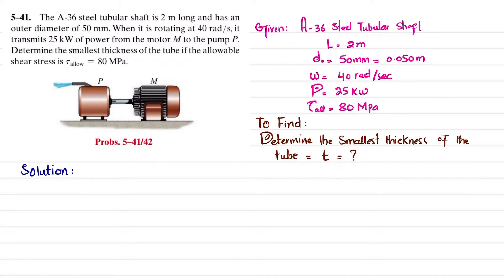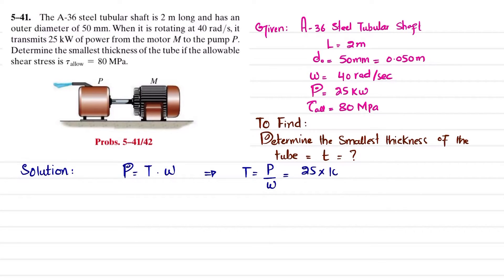We have to find the smallest thickness t of the tube. We know that power P is equal to the product of torque and angular velocity. So torque will be equal to power divided by angular velocity. Power is given as 25 kilowatts, so 25 × 10³ divided by angular velocity of 40 radians per second. When you calculate it, you get torque equal to 625 newton-meters.